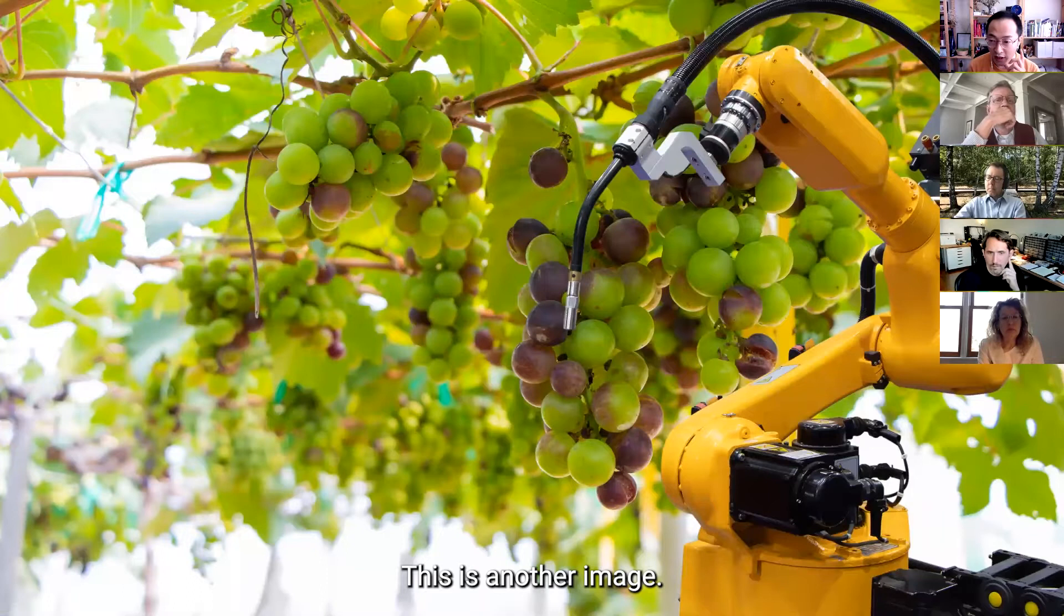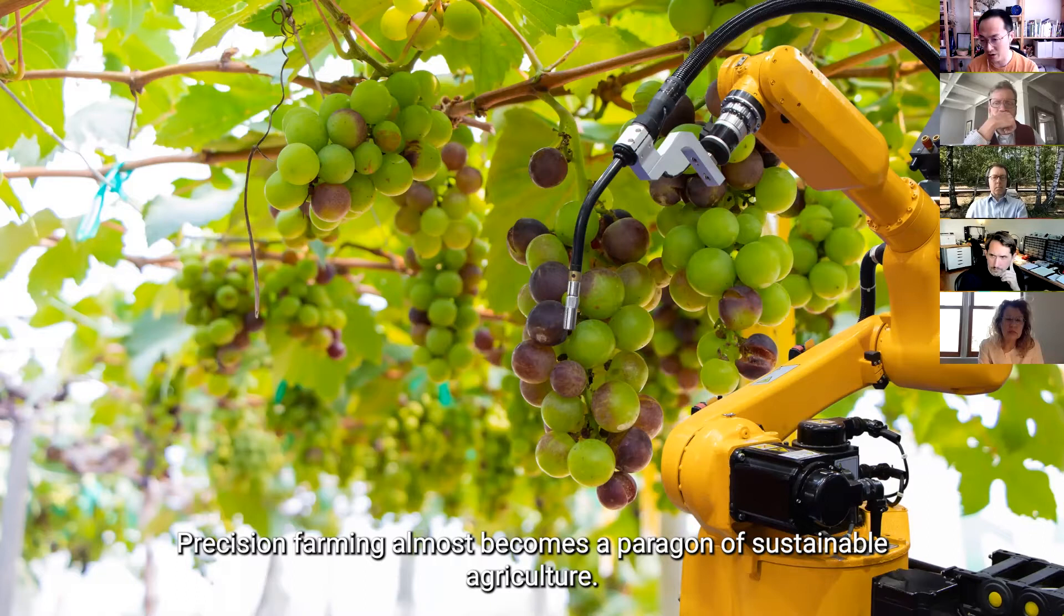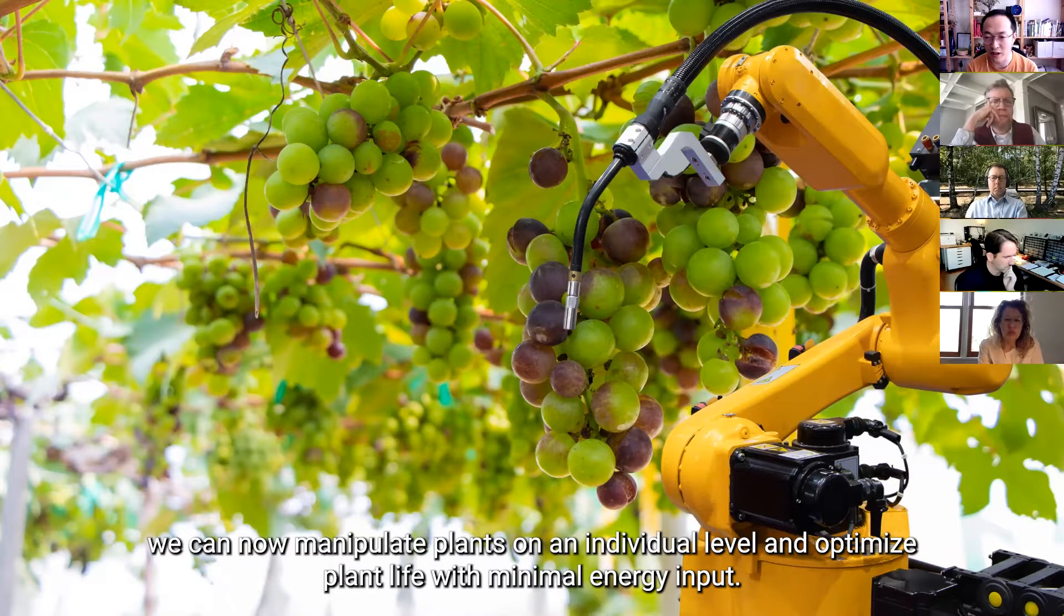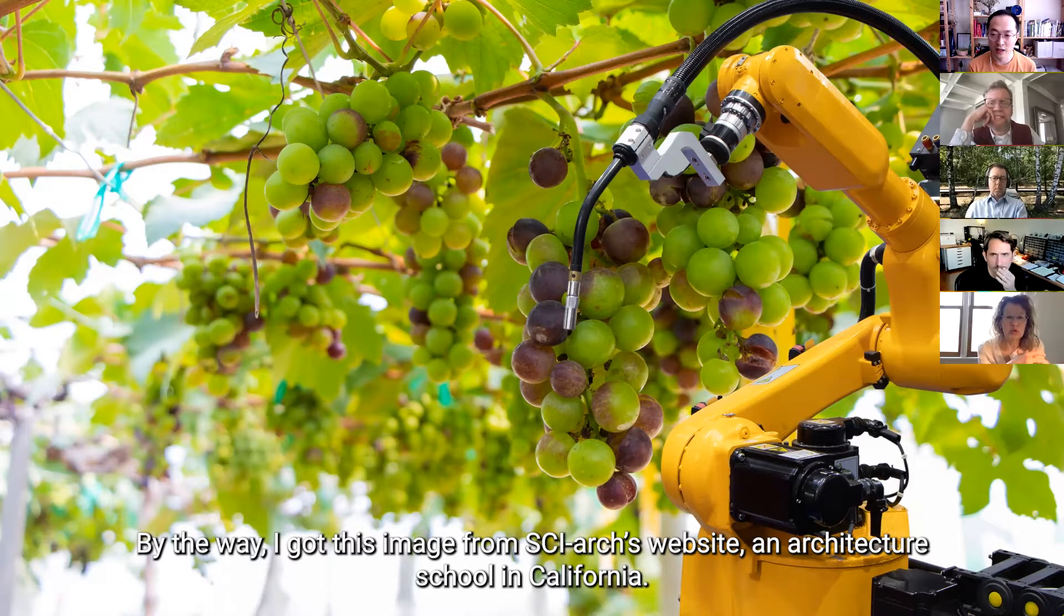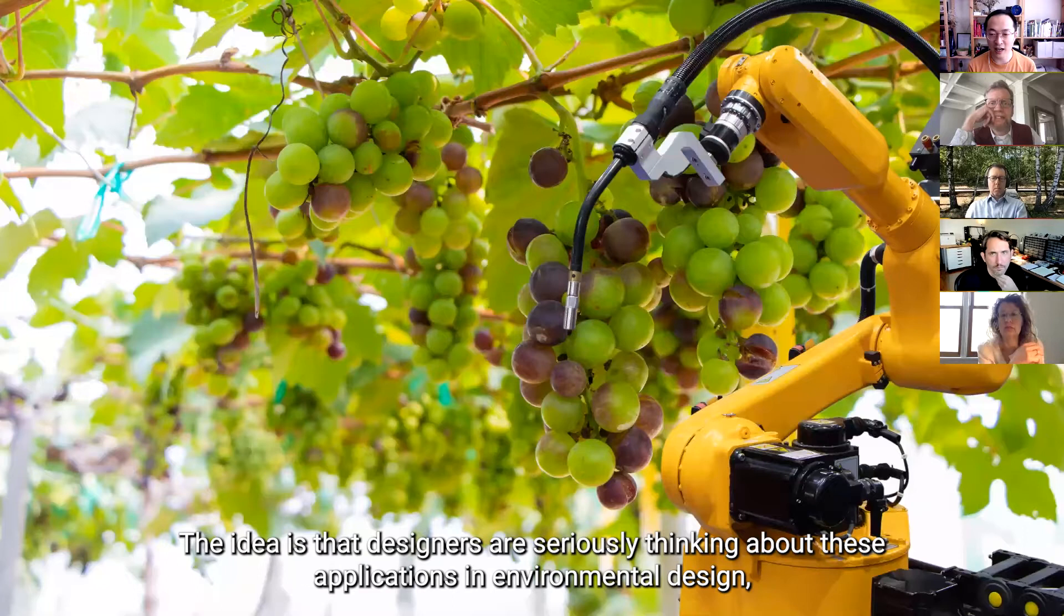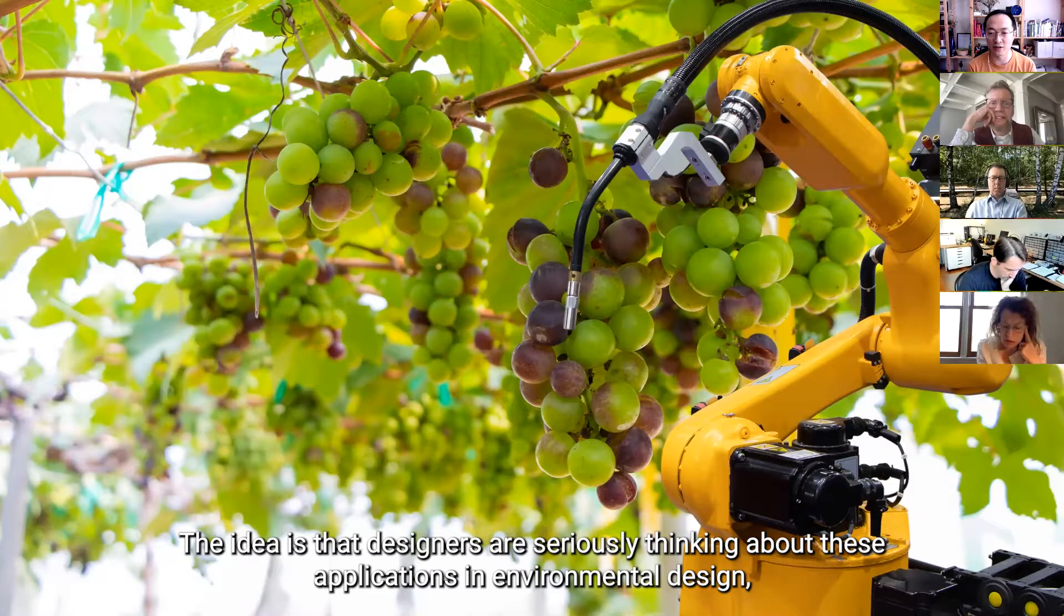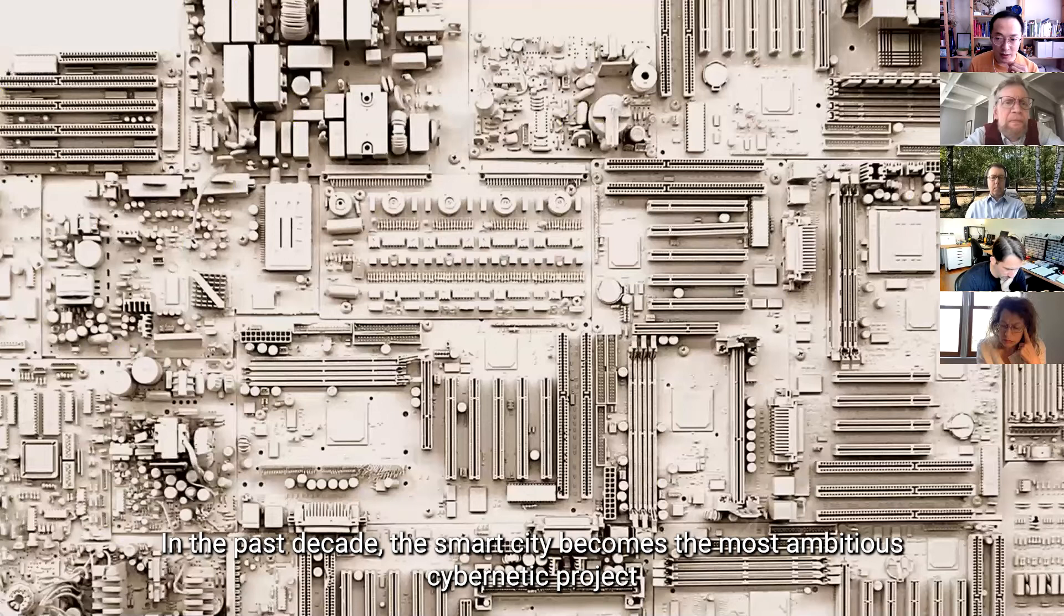So this is another image. Precision farming almost becomes a paragon of sustainable agriculture and with sensors and robotic armatures, we can now manipulate plants on an individual level and optimize plant life with minimal energy input. By the way, I got this image actually from SciArc's website, which is an architecture school in California. And they use this image to brand their synthetic landscape program. So the idea behind this is that designers are seriously thinking about all of these kinds of applications in environmental design for better or for worse.